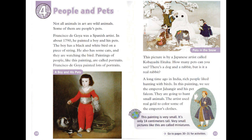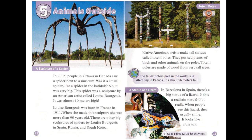This picture is by a Japanese artist called Kobayashi Eitaku. How many pets can you see? There's a dog and a rabbit — but is it a real rabbit? A long time ago in India, rich people liked hunting with birds. In this painting, we see the emperor Jahangir and his pet falcon. They are going to hunt small animals. The artist used real gold to color some of the emperor's clothes. This painting is very small — it's only 14 centimeters tall. Very small pictures like this are called miniatures.